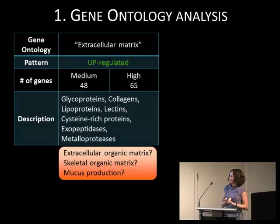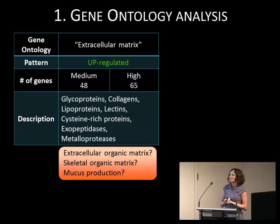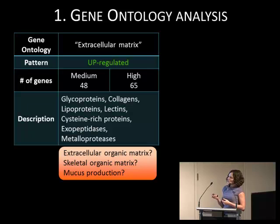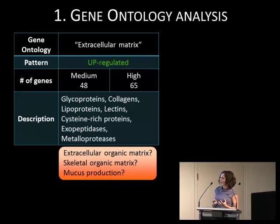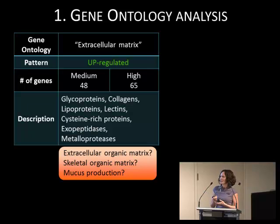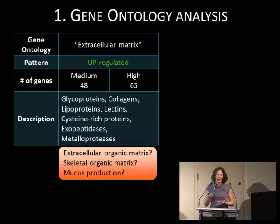For the gene ontology analysis, we identified genes differentially expressed between control and stress conditions, annotated them based on available databases, and looked at which categories were most enriched — in other words, which pathways are most affected by the stress. We found two main categories. The first is extracellular matrix, and all the genes in this category were upregulated in response to stress. In corals, we can distinguish two extracellular matrices: the extracellular organic matrix, involving cell-cell and cell-substrate interactions, and the skeletal organic matrix — the proteins incorporated into the skeleton that form the backbone for the calcium carbonate skeleton.